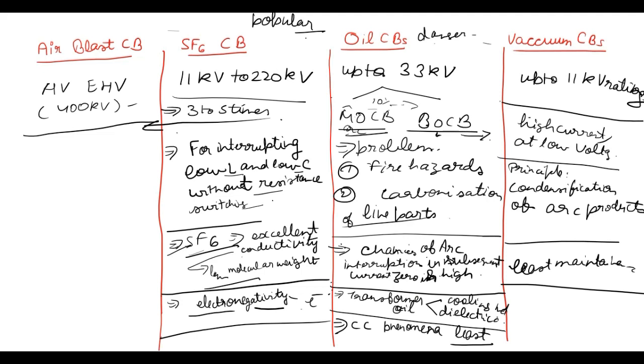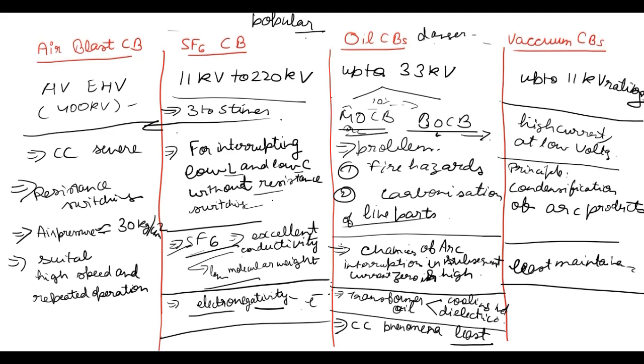Now air blast circuit breakers. So here CC phenomena is very severe. Here mainly resistance switching is used. Here air pressure is around 30 kilogram per centimeter square. It is suitable for high speed and repeated operation.